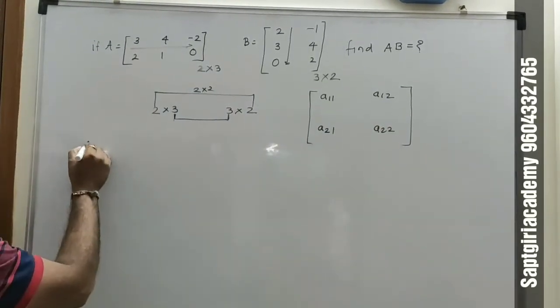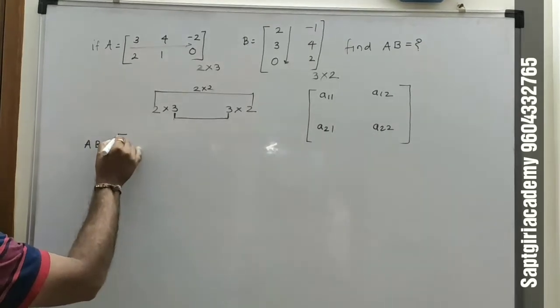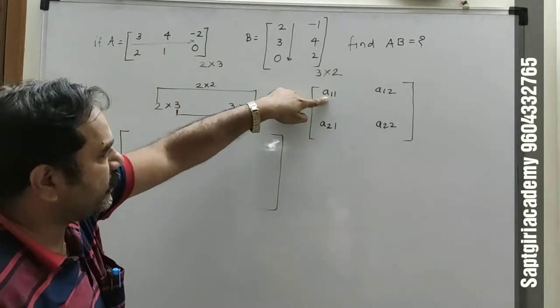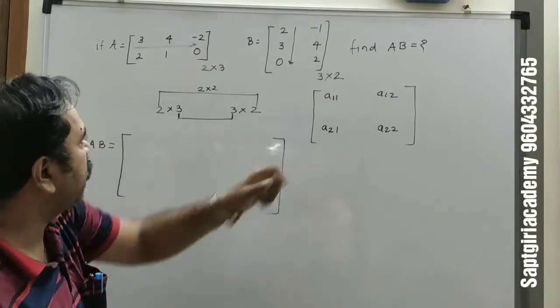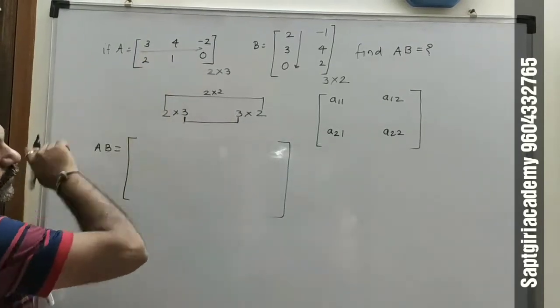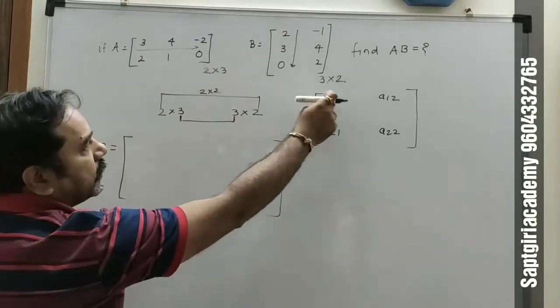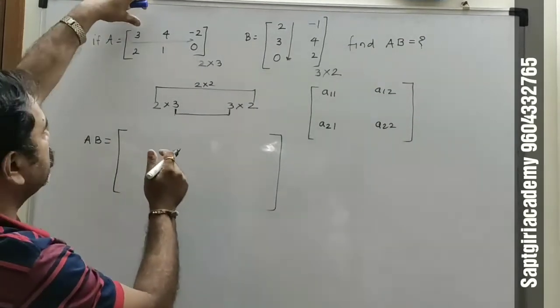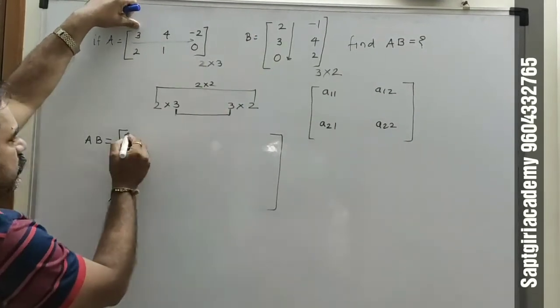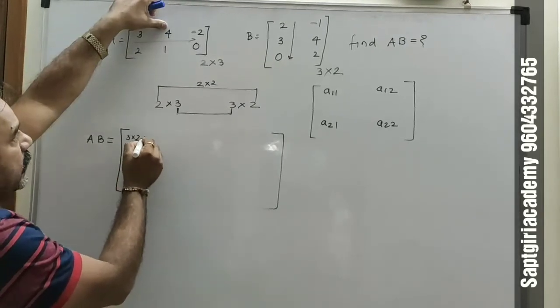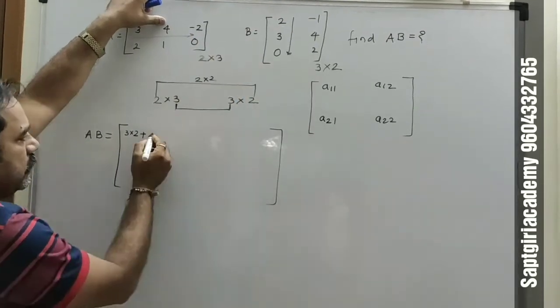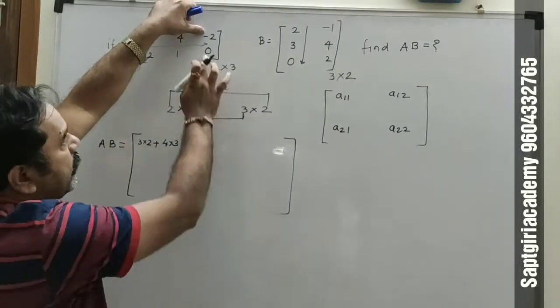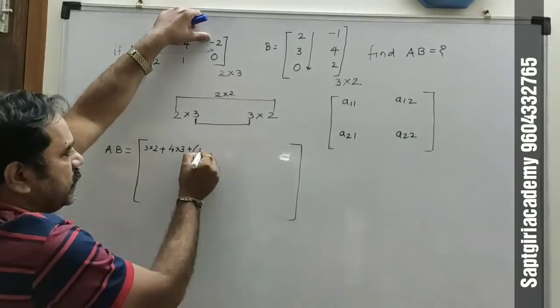By multiplying matrices A and B, the first element is A11. A11 means first row of first matrix into first column of B. So 3 into 2 plus 4 into 3 plus minus 2 into 0, that is 0.